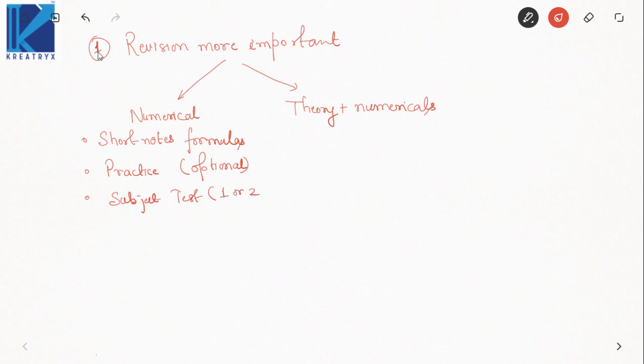That means in subjects where there is only numerical solving and not too many theoretical concepts, you can revise those concepts from your short notes, then either practice some problems or directly attempt a subject test to check the kind of problems that can be framed and whether you are at the level where you can crack such problems. In subjects requiring theory plus numericals, revise your complete notes or study material — class notes for classroom students, or postal study course notes — and then go for a subject test.